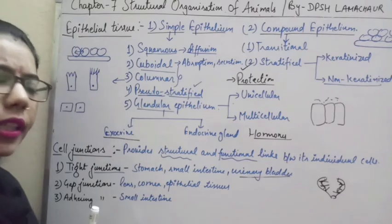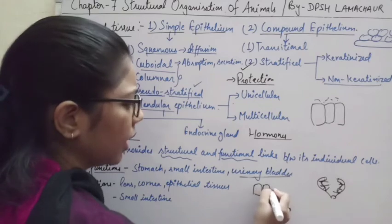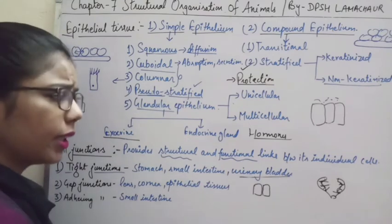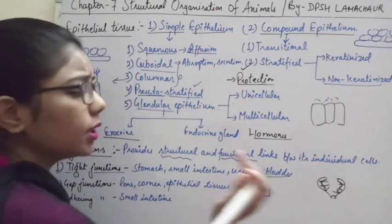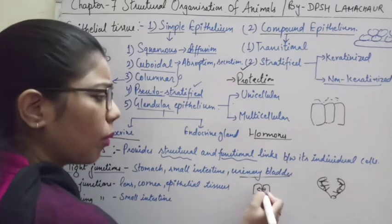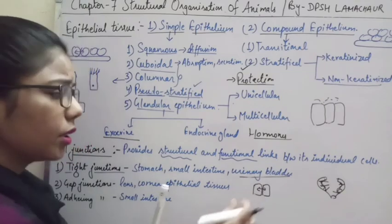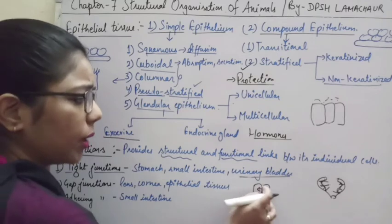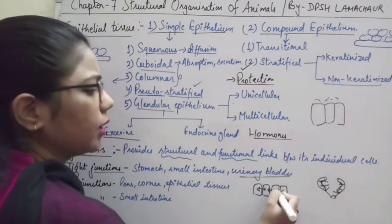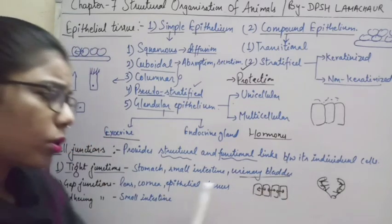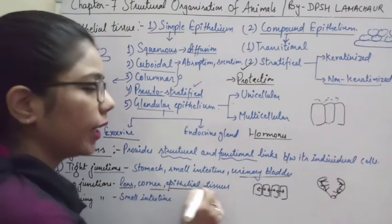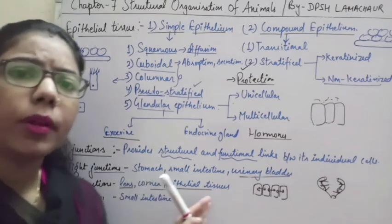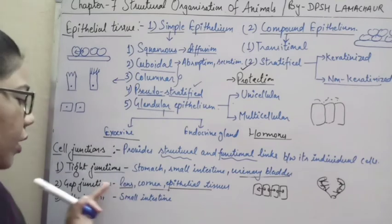Gap junctions allow a gap between cells for material to move through tissues. They facilitate the transfer of cytoplasm between cells, enabling exchange from one place to another. Gap junctions are important in avascular tissues — like the lens and cornea — where there is no proper blood conduction, so conduction occurs through these junctions.